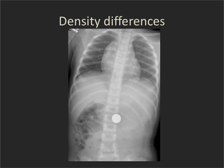We see edges because there's a difference in density between two areas. We see the edge of the lateral heart border because of the density difference between the heart and lungs. We see the edge of the liver because of the difference between the liver and adjacent bowel, and the edges of a rib because of the difference between the calcific density of the rib and the overlying soft tissue.